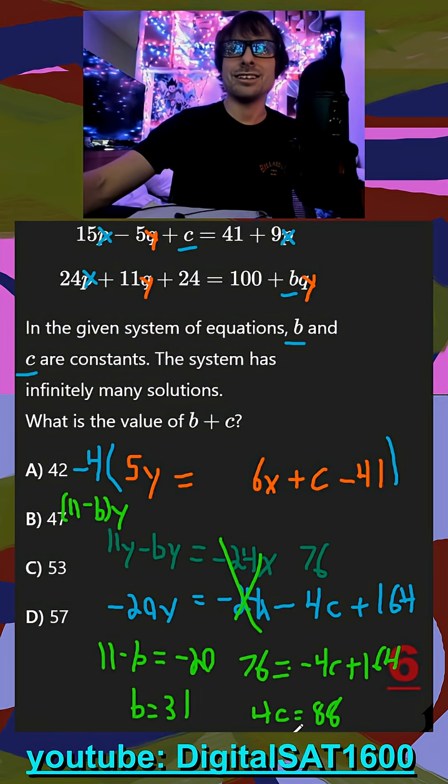Finally, divide by 4, and you get c equals 22. So b plus c is 31 plus 22, giving a final answer of 53.